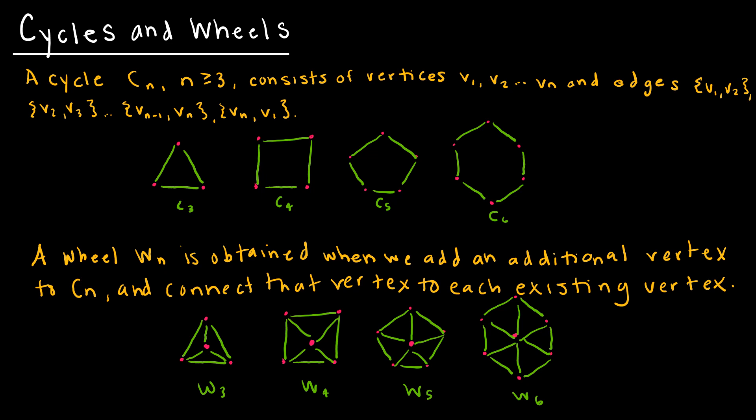The edges go from v_{n-1} to v_n and then v_n back to v1, so it basically makes a cycle — it goes all the way around the circle. A wheel is obtained when we add one extra vertex, typically placed in the middle, which is then connected to all of the existing vertices. We can see the similarities between these two graphs.